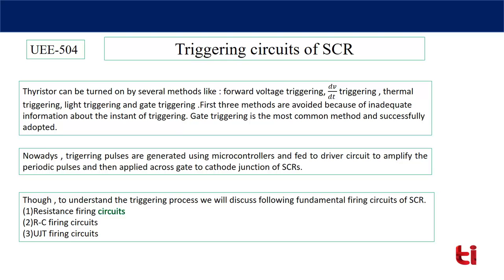The reason is that the instant of triggering is not available — that means you will not be able to find at what time or at what angle your thyristor is going to be turned on. That's why the most popular method is gate triggering, and in some cases light triggering is preferred where isolation between source and driver circuit is required.